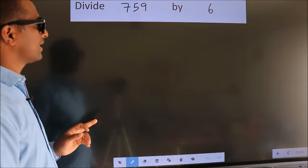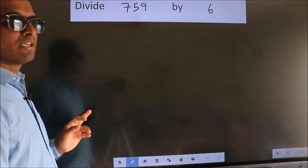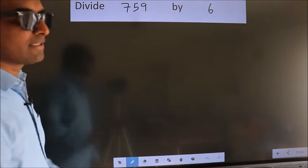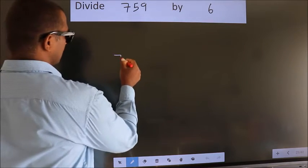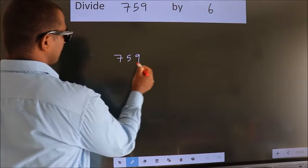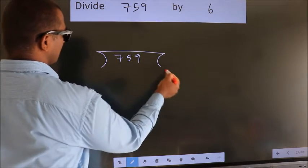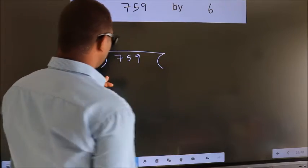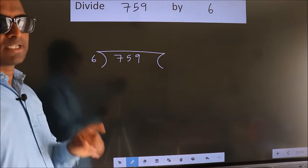Divide 759 by 6. To do this division, we should frame it in this way. 759 here, 6 here. This is your step 1.